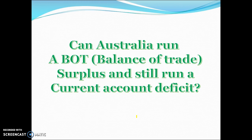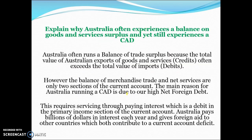Can Australia run a balance of trade surplus and still run a current account deficit? Australia often runs a balance of trade surplus because the total value of exports can exceed the value of imports for goods and services. However, the balance of merchandise trade and net services are only two of the four sections of the current account. The main reason for Australia's current account deficit is our high level of net foreign debt, which requires servicing through interest repayments — a debit in the primary income account. We pay billions of dollars every year in interest, creating a large deficit in net primary and net secondary income. So even with a balance of trade surplus, we still run a current account deficit because of those net income accounts.